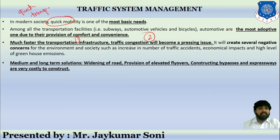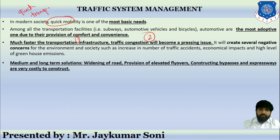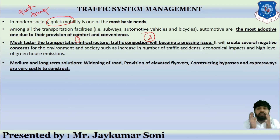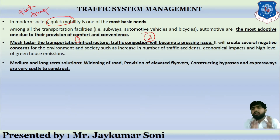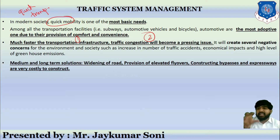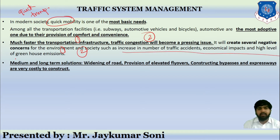Faster transportation infrastructure can sometimes mean lesser congestion, but on important roads you might observe that faster the transportation, higher is the congestion, because everyone wants to move fast and overtake. This creates several negative concerns for both the environment and society, such as an increasing number of traffic accidents, economic impact, and high levels of greenhouse emissions.